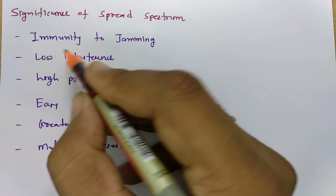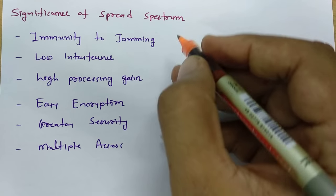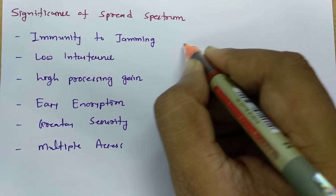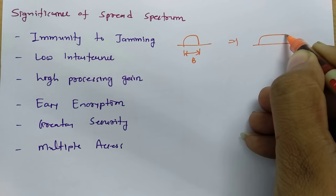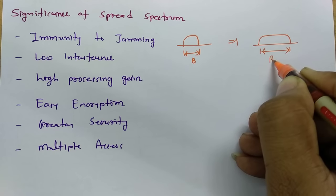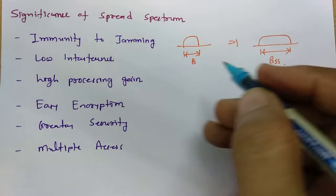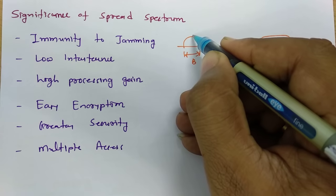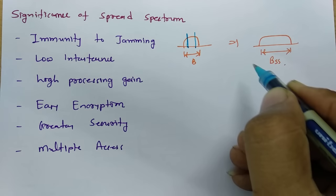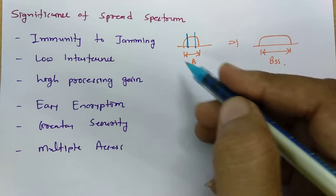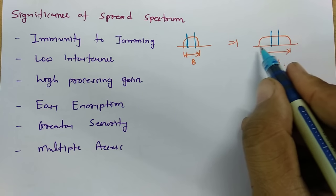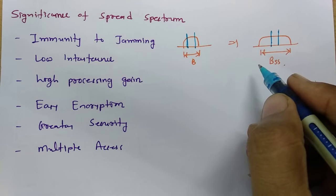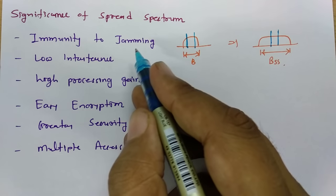Now let us look at the significance of spread spectrum. First is immunity to jamming. If you have a lower bandwidth signal, jamming is easier. But if you have a higher, spreaded bandwidth, jamming is difficult because even if part of the band is jammed, there are other portions of the bandwidth that can still receive the information. So immunity to jamming increases with spread spectrum.